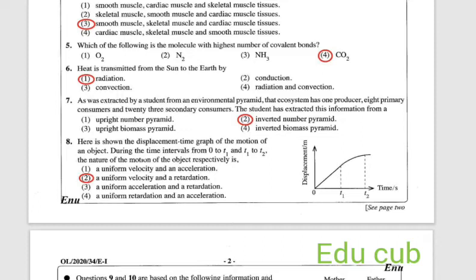Seventh one: data was extracted by a student of an environmental pyramid. That ecosystem has one producer, eight primary consumers and 23 secondary consumers. The student has extracted this information from an upright number pyramid, inverted number pyramid, upright biomass pyramid, or inverted biomass pyramid. Answer is very simple, second one, inverted number pyramid.